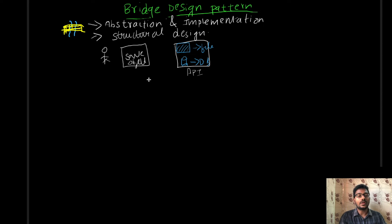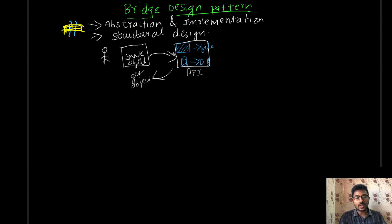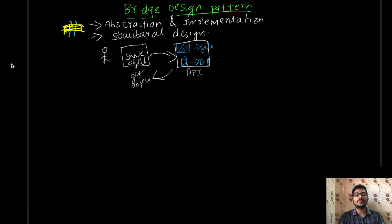You can swap in any implementation at any time without affecting the abstraction layer. The client doesn't need to worry about those things. If a new technology comes after two years, the implementation can be upgraded — the database can be replaced with some other new technology. The client just calls save object. Similarly, if the client calls get object, and the object was stored in a file it is retrieved from the file; if stored in a database, it is retrieved from the database. This is a major role bridge design pattern plays.